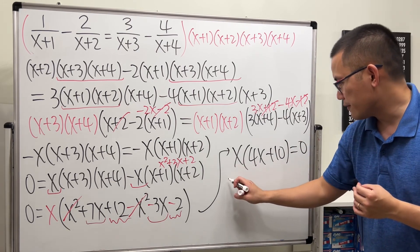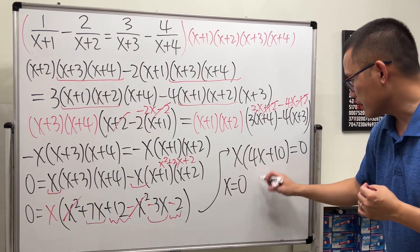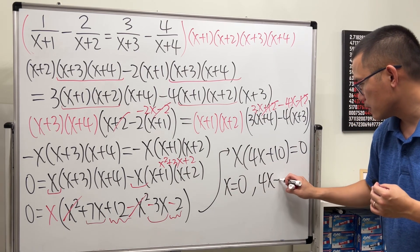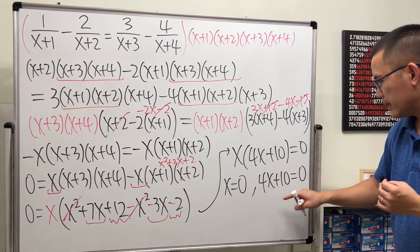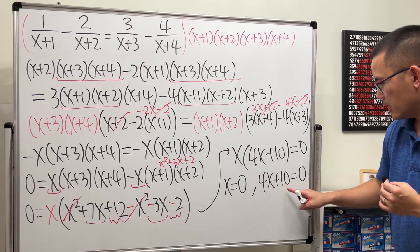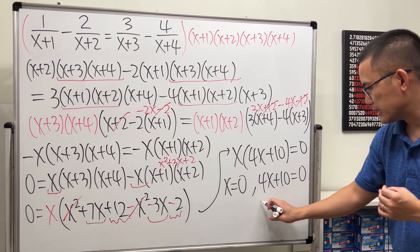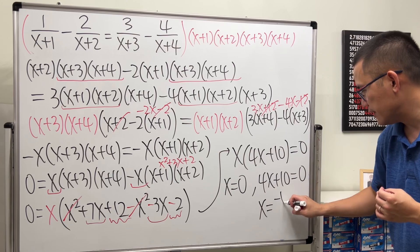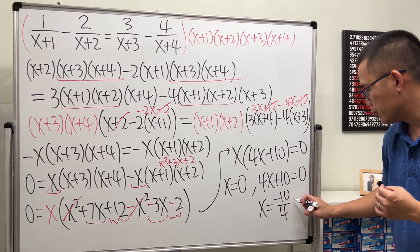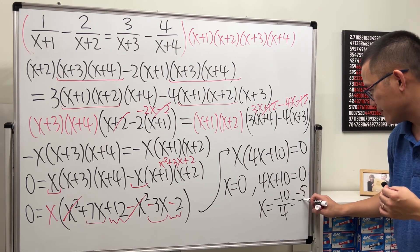So, now, as you can see, we can set the first factor equal to 0, or the second factor equal to 0. And then solve this real quick. Bring the 10 to the other side, and then divide both sides by 4. x equals negative 10 over 4, which it reduces to negative 5 over 2.